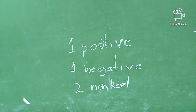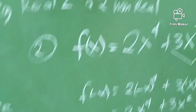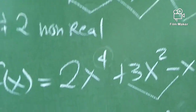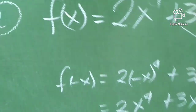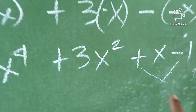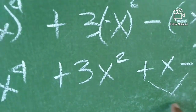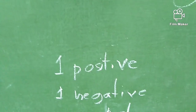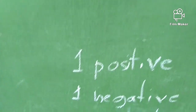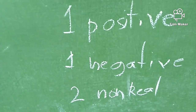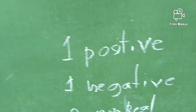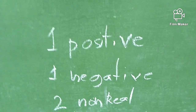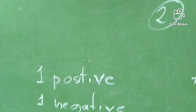So that is the possible answer. To repeat: when it was positive x, there was one interchange of sign. When we made x negative, we also found one interchange of sign. So the answer is 1 positive, 1 negative, and 2 non-real zeros.